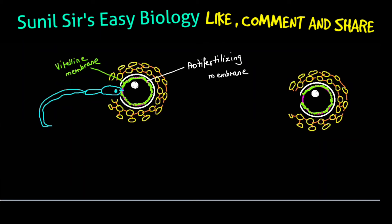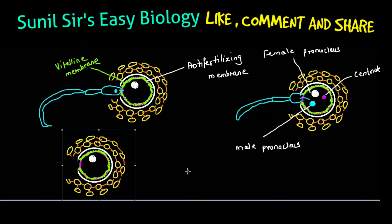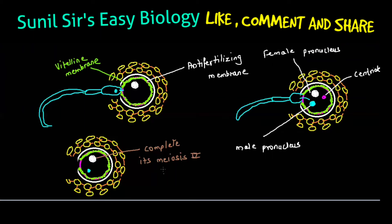After fertilization, a very important event occurs: the male pro-nucleus and female pro-nucleus — the sperm's pro-nucleus and egg's pro-nucleus — will fuse together. When they fuse, we call this fertilization. The centriole is provided by the sperm, and the egg completes meiosis 2. Finally, the male pro-nucleus and female pro-nucleus fuse and the fertilization process is complete.